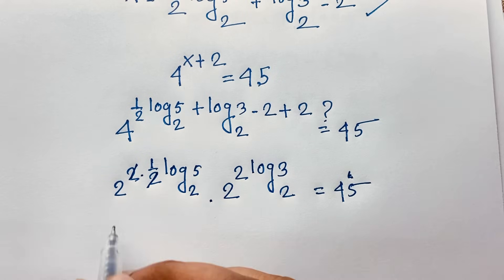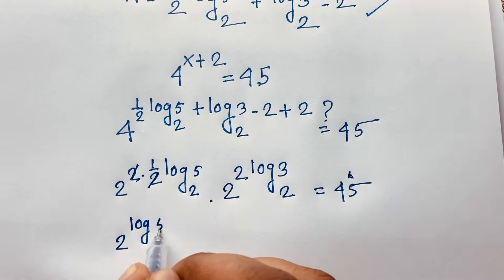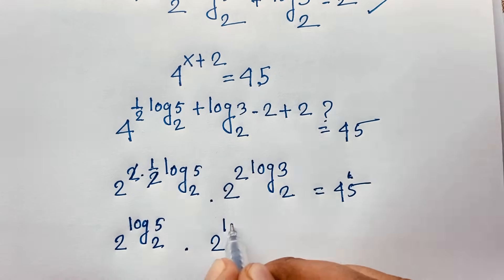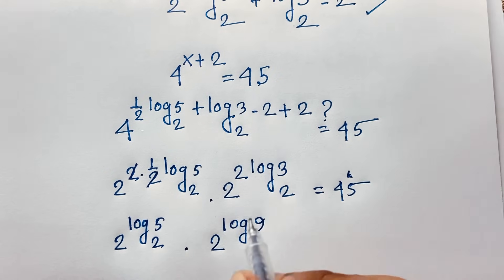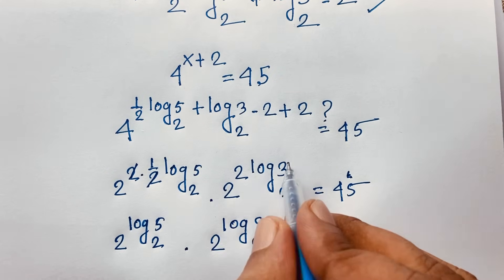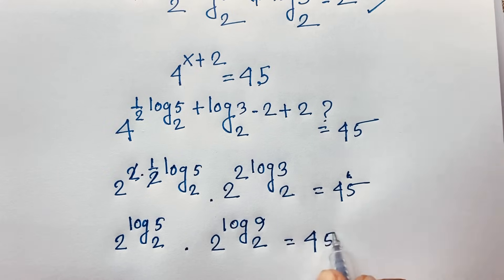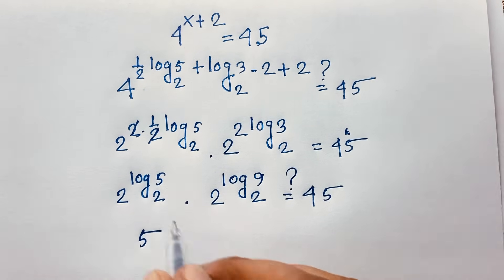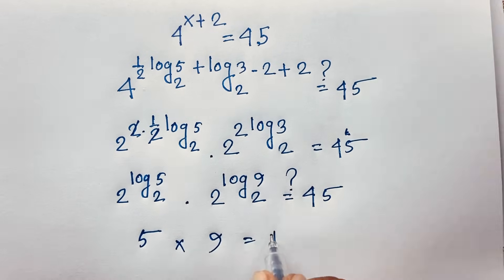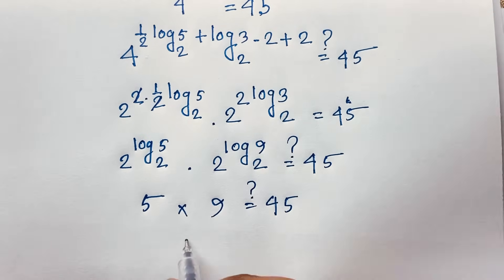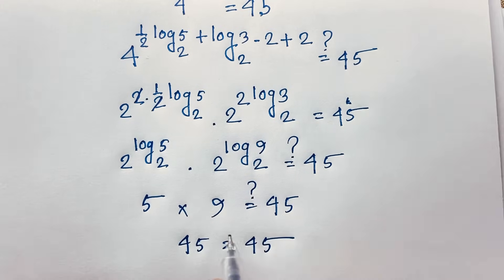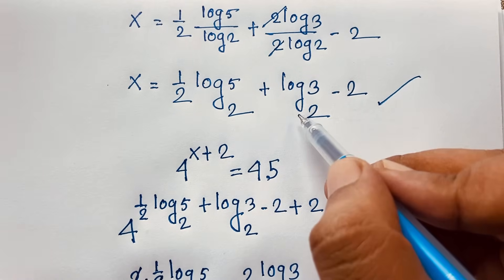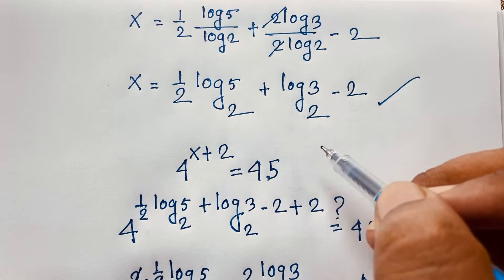Continuing the verification: 2 to the power log₂5 equals 5, and 2 to the power log₂9 equals 9, because 3 squared equals 9. So we get 5 times 9 equals 45, which equals 45. The left-hand side equals the right-hand side, confirming our answer. Our final answer is x equals one-half log₂5 plus log₂3 minus 2. Thank you all — if you enjoyed this video, please subscribe to my channel. Goodbye, take care.